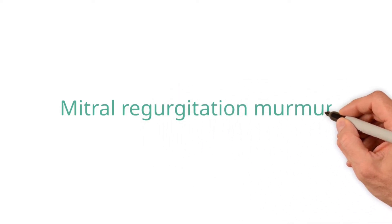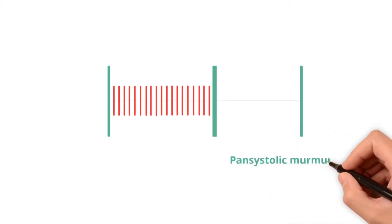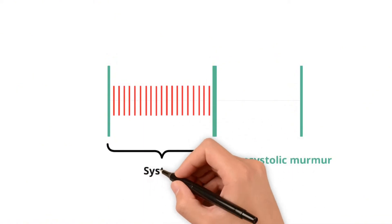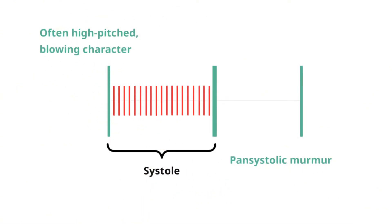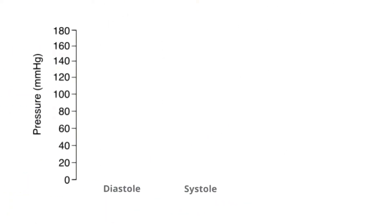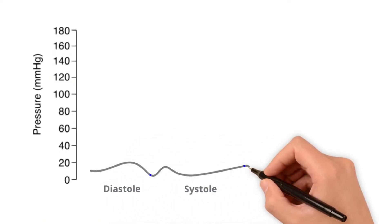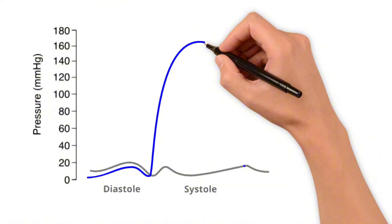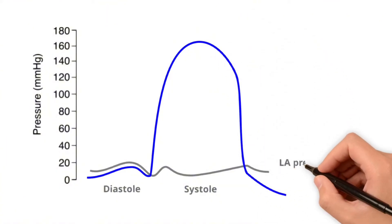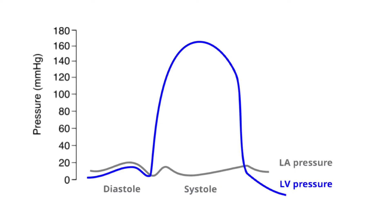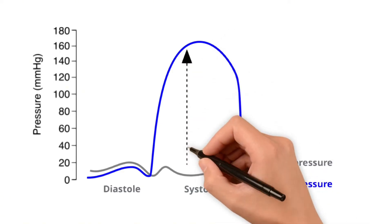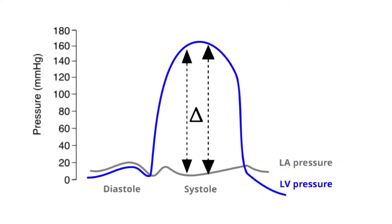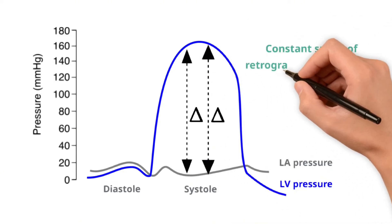Now let's review the heart sounds produced by mitral regurgitation. Mitral regurgitation typically produces a pansystolic murmur, meaning that it has a similar intensity throughout systole. It is often high-pitched and has a blowing nature. Unlike in aortic stenosis where the pressure in the aorta is relatively high, the pressure in the left atrium is so much lower than that in the left ventricle, that the pressure gradient between these two is almost constant throughout systole. This means that the speed of blood ejected backwards through the mitral valve, and hence the loudness of the murmur, are both relatively constant.